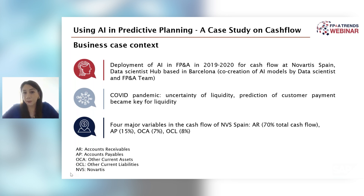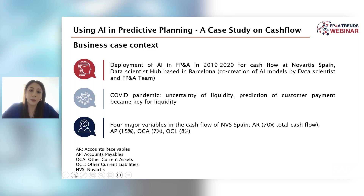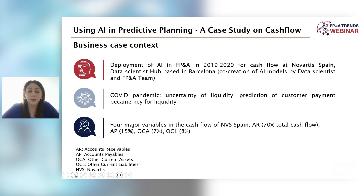We had several major variables in the Spanish subsidiary's cash flow. The main one was accounts receivable, which accounted for 70% of the cash flow. The other three variables — accounts payable, OCA (other current assets), and OCL (other current liabilities) — together accounted for the remaining 30% of total cash flow.